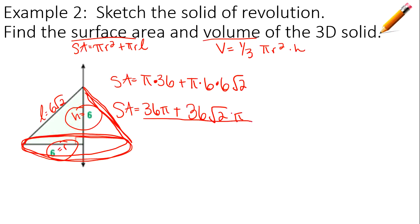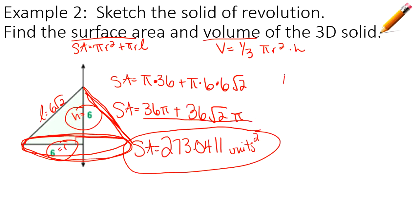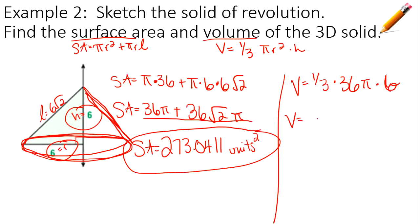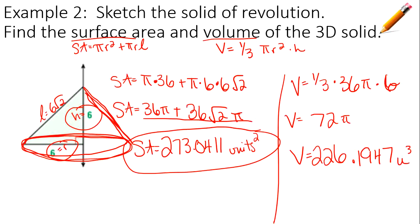The first term has pi but no radical, and the second term has pi and a radical, so you can leave the answer as 36 pi plus 36 root 2 times pi, or punch it into your calculator to get approximately 273.04 units squared. For volume: one-third times 36 pi times 6 equals 72 pi, or approximately 226.19 units cubed. That's the volume of the cone.